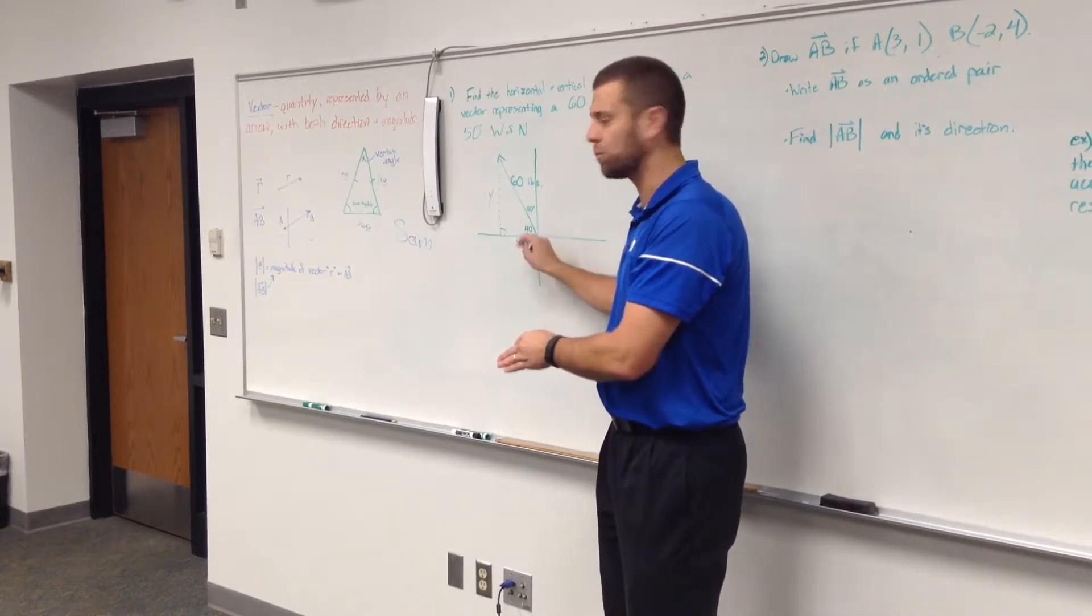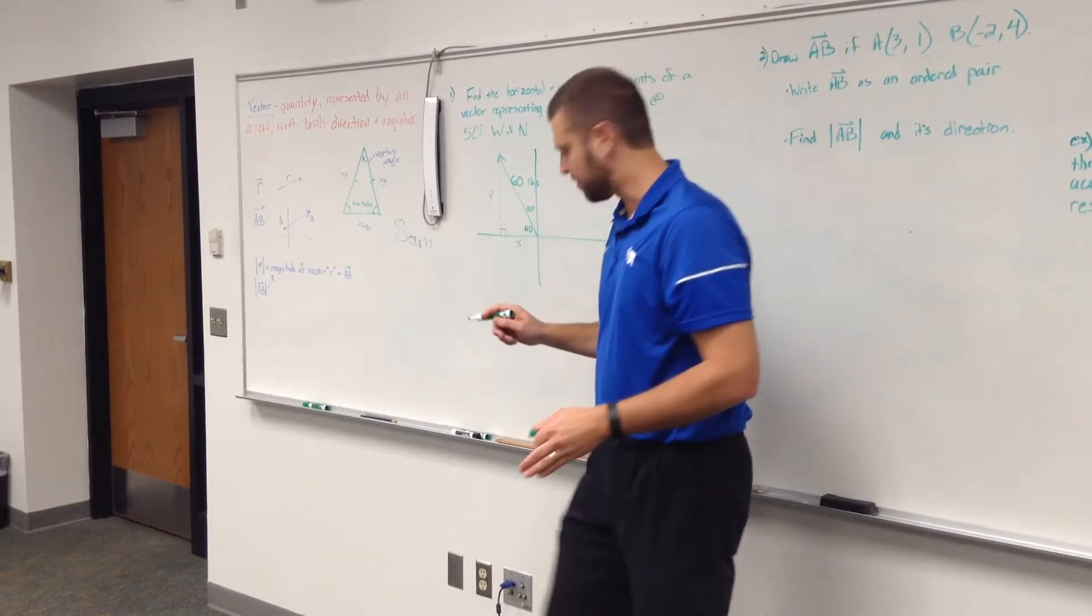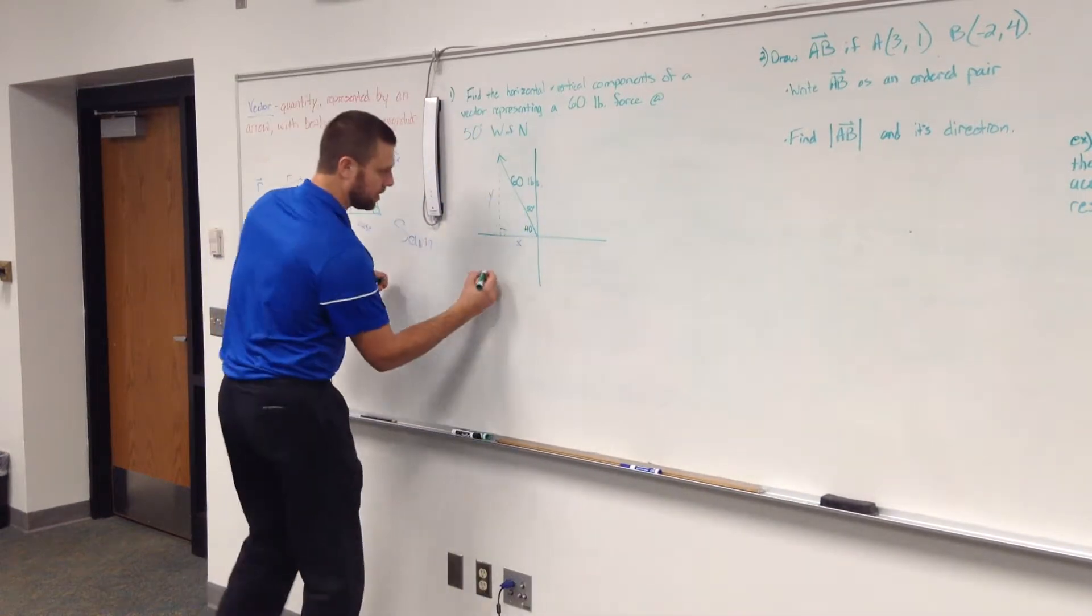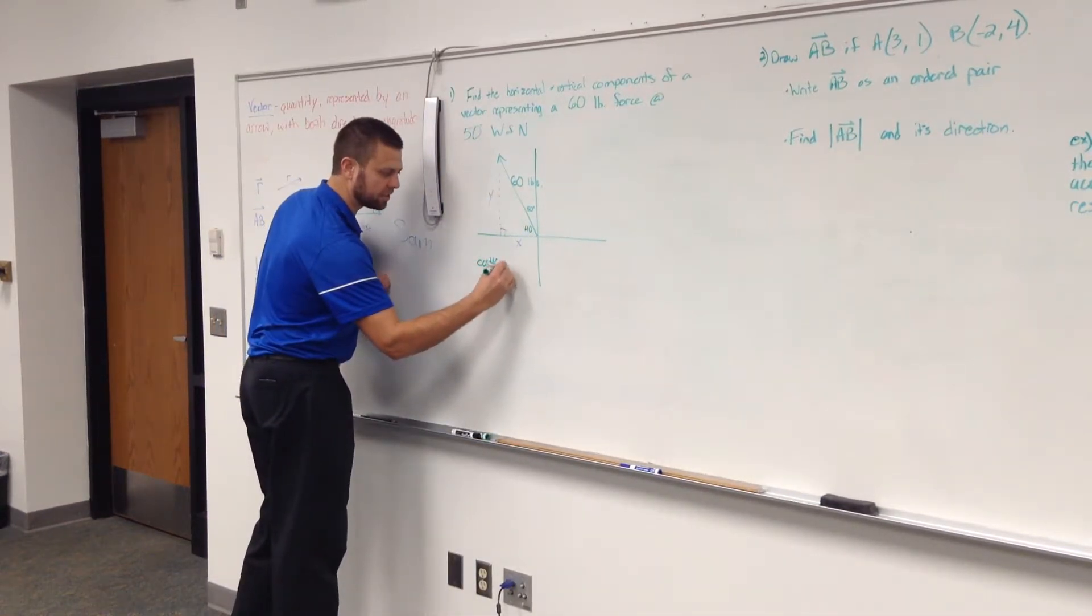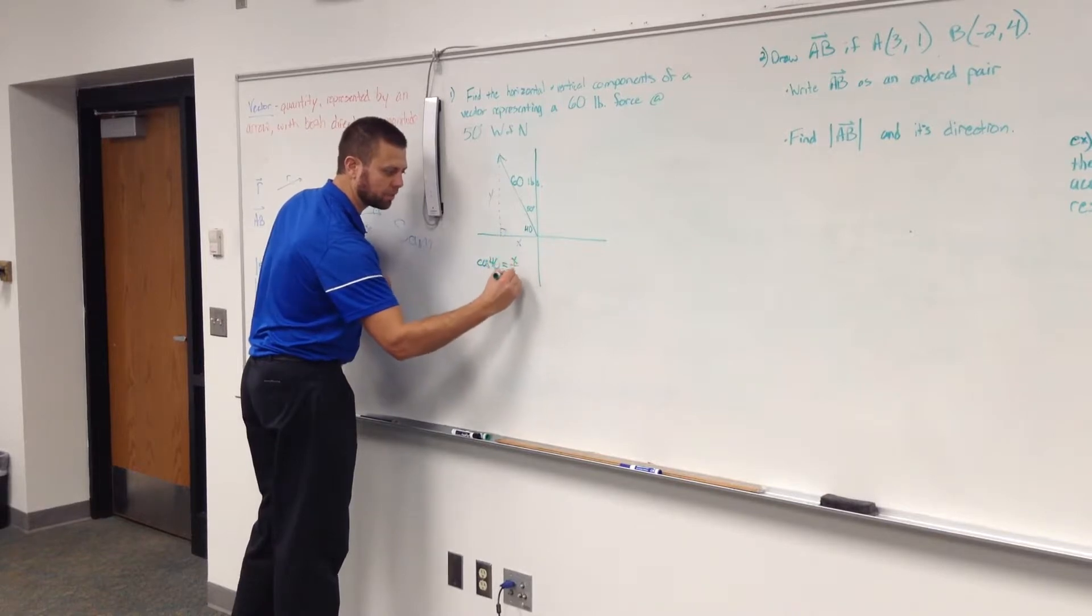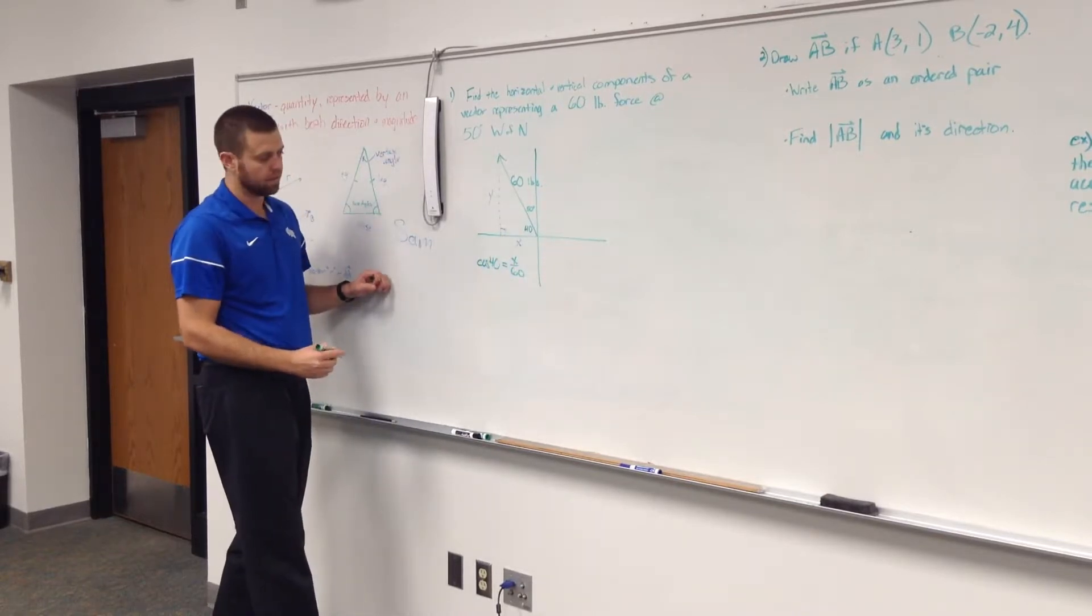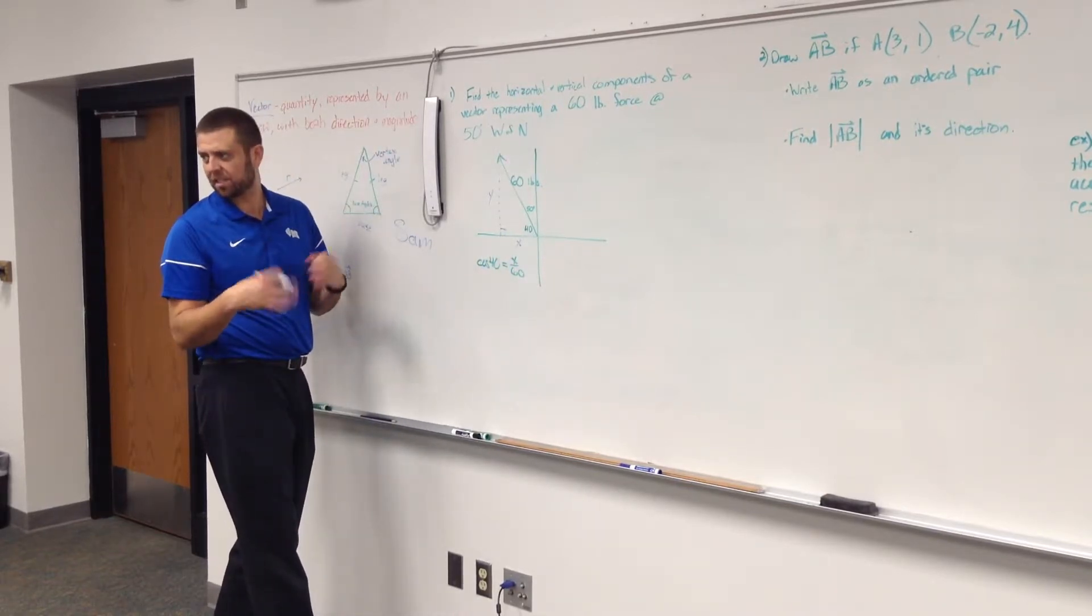What will help you find y? Sine. So my setup would be cosine of 40 degrees equals x over 60, multiply both sides by 60 and you'll get your x.